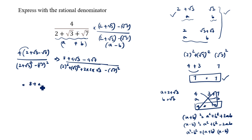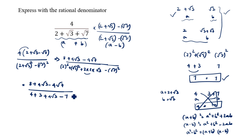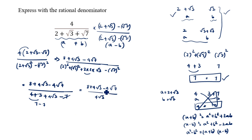So the denominator becomes 4 plus 3 plus 4 root 3 minus 7 = 7 minus 7 plus 4 root 3 = 4 root 3. The numerator is 8 plus 4 root 3 minus 4 root 7. We can factor out 4: giving 4(2 plus root 3 minus root 7) divided by 4 root 3. The 4s cancel, leaving (2 plus root 3 minus root 7) divided by root 3.